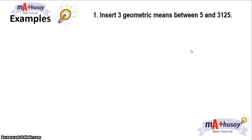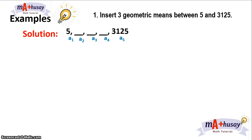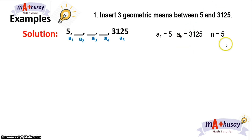Let's have example number 1: Insert 3 geometric means between 5 and 3,125. We know that in this problem, we have 5 terms in the given sequence, where 5 is the first term, 3,125 is the fifth term, and n is equal to 5.